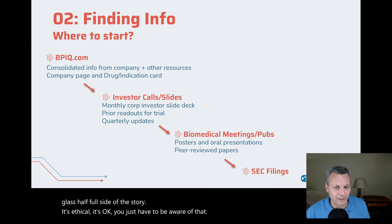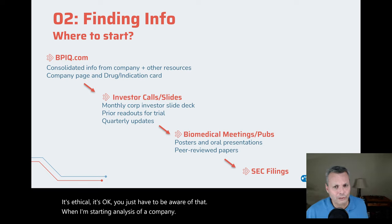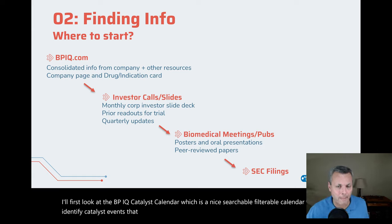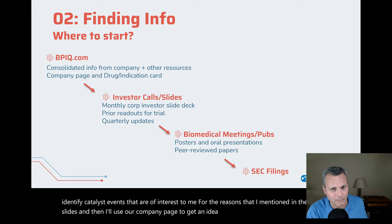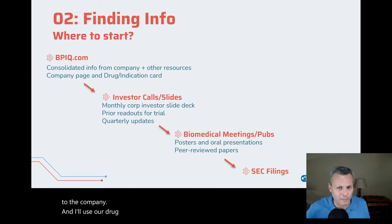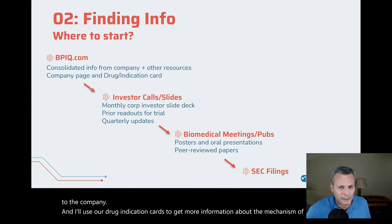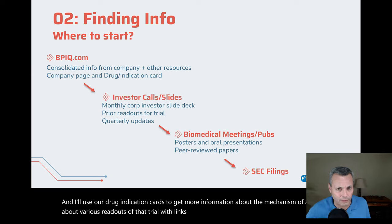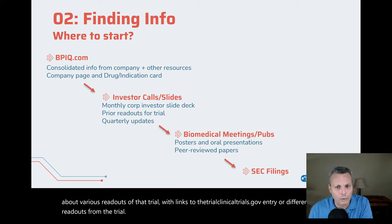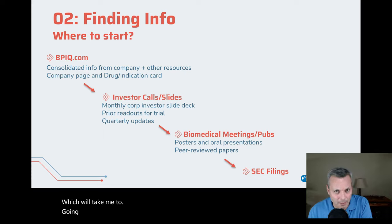When I'm starting analysis of a company, I'll first look at the BPIQ catalyst calendar, which is a nice searchable, filterable calendar to identify catalyst events of interest to me. Then I'll use our company page to get an idea of how important that asset might be to the company. And I'll use our drug indication cards to get more information about the mechanism of action and various readouts of that trial, with links to the clinicaltrials.gov entry.